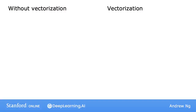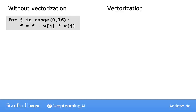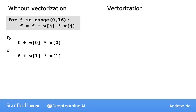Let's take a deeper look at how a vectorized implementation may work on your computer behind the scenes. Let's look at this for loop. A for loop like this runs without vectorization. So if j ranges from 0 to 15, this piece of code performs operations one after another. On the first time step, t0, it first operates on the values at index 0. At the next time step, it calculates values corresponding to index 1, and so on until the 15th step. In other words, it calculates these computations one step at a time, one step after another.